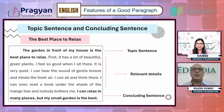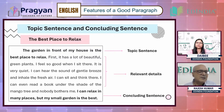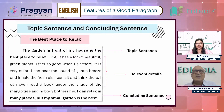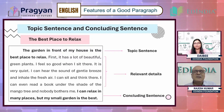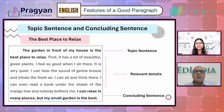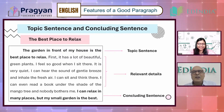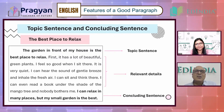And it also establishes his point very strongly at the end, because through this sentence — 'I can relax in many places but my small garden is the best' — the overall idea of the paragraph is established here. So I think this is why the concluding sentence works, and this is why this paragraph is nice.